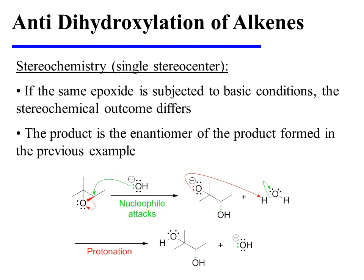However, if that exact same epoxide substrate is subjected to basic conditions, the stereochemical outcome differs. In this instance, the strong nucleophile hydroxide attacks the epoxide at its less hindered carbon — the less highly substituted carbon, which in this instance happens to be secondary. That breaks open the red carbon-oxygen bond of the epoxide. Notice that this time the attack is happening at the substrate's stereocenter, so the configuration is inverted at that center. The alkoxide intermediate removes a proton from water, affording the vicinal diol product. Notice that this vicinal diol is the enantiomer of the one formed in the previous example.